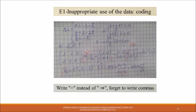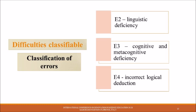Another example of inappropriate use of the data—coding. The student understands the data of the problem but is not able to write them correctly in the semiotic system more suitable to get the answer. She writes equals instead of implies and also forgets to write the commas.